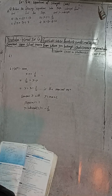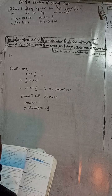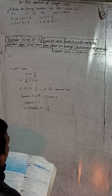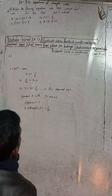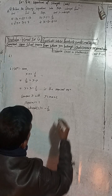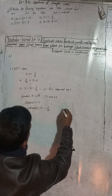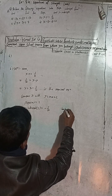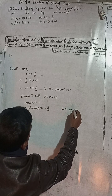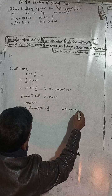In the book they have written y-intercept as plus 1 by 10, but the correct answer is minus 1 by 10. The book answer is wrong — it is a print mistake.